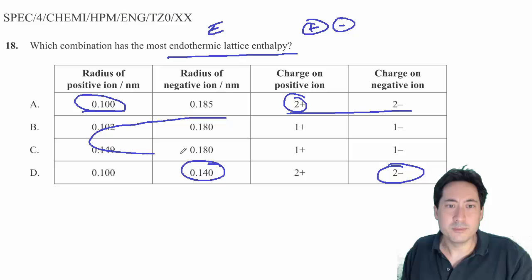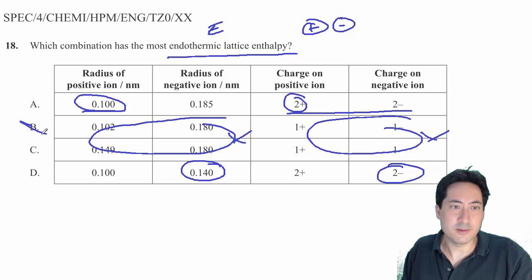These ones are quite large, all of them, and plus they're not very positive and negative. So we can get rid of B and C. All right, let's just have a careful look now at A and D.